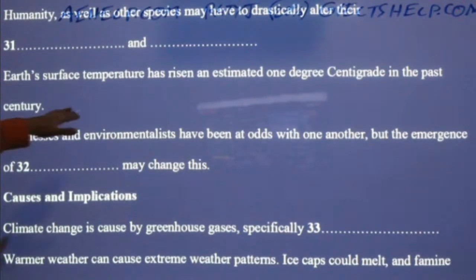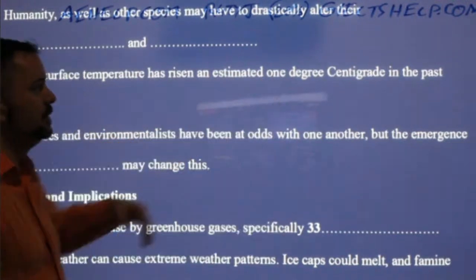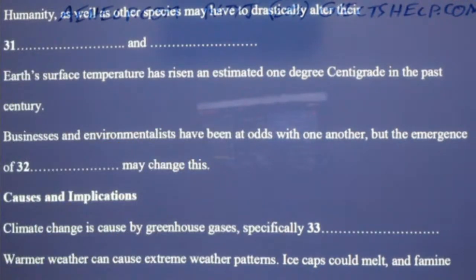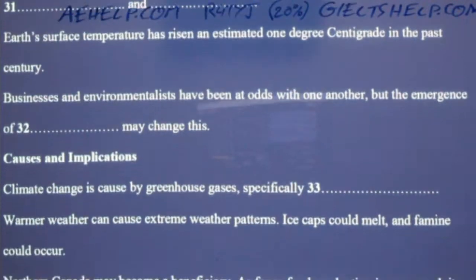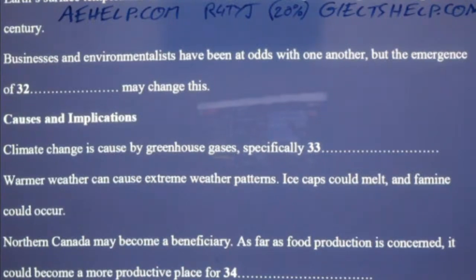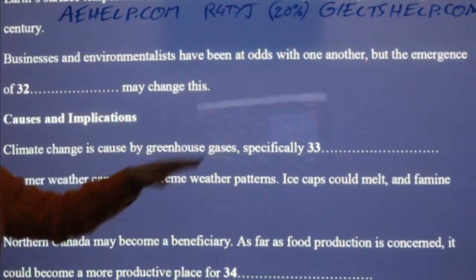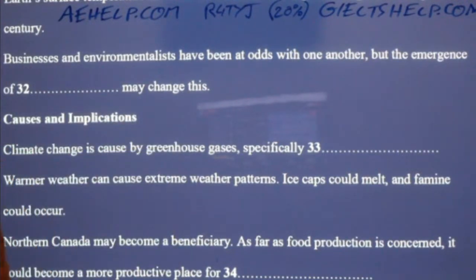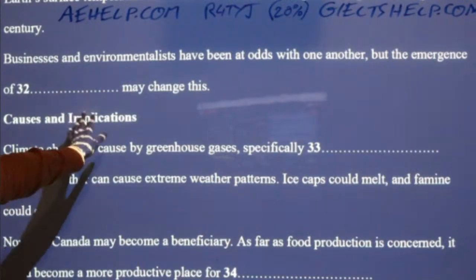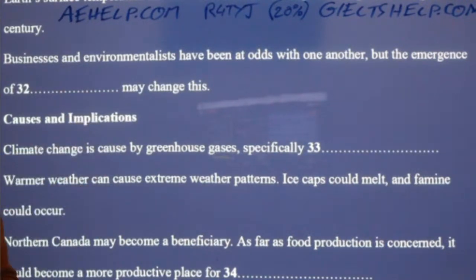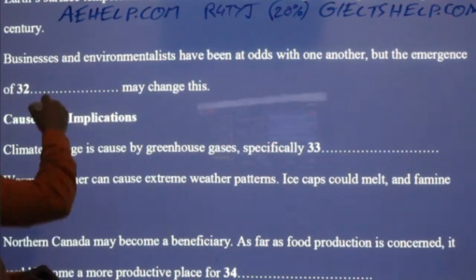Earth's surface temperature has risen an estimated one degree centigrade in the past century. Businesses and environmentalists have been at odds with one another, but the emergence of something may change this. What may change the conflict between businesses and environmentalists? Very good, Stuti — yes, green products. So green products — products that are environmentally friendly.